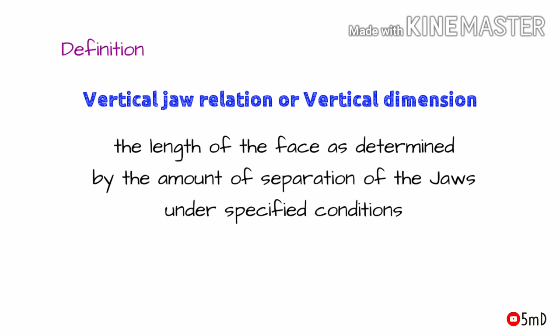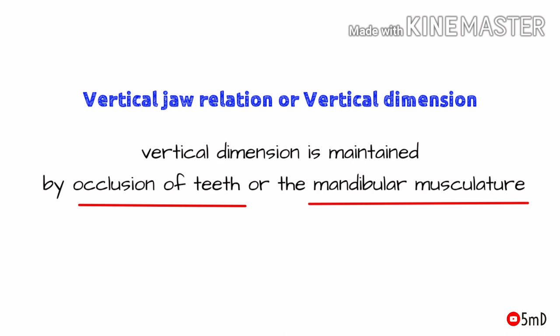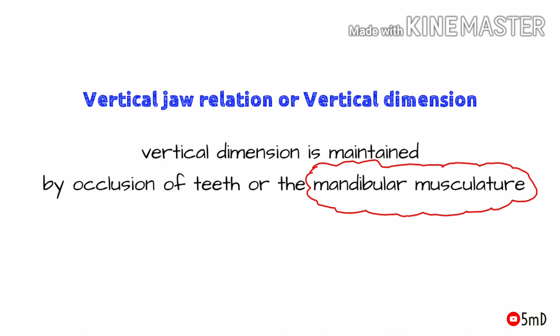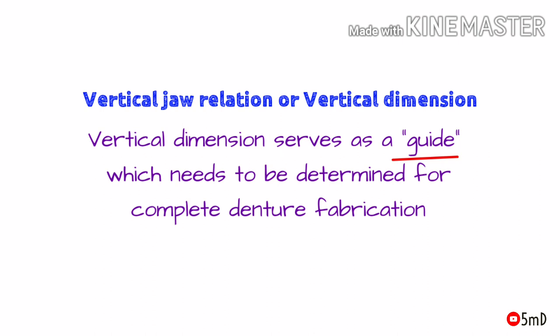To define vertical jaw relation: vertical dimension is the length of the face as determined by the amount of separation of the jaws under specified conditions. This vertical dimension is usually maintained by occlusion of the teeth and mandibular musculature. In an edentulous case where we are fabricating a complete denture, there is no support from teeth, and we are completely dependent on the musculature to give the vertical dimension. This vertical dimension will serve as a guide for fabricating our complete denture.